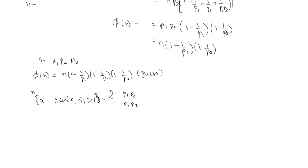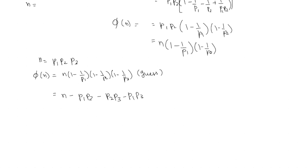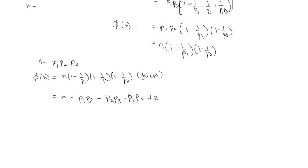The count should be: n, minus the multiples of each pair — that is, n/p1·p2 multiples of p3, n/p1·p3 multiples of p2, and n/p2·p3 multiples of p1. But we are not counting properly because we are removing some multiples two times.